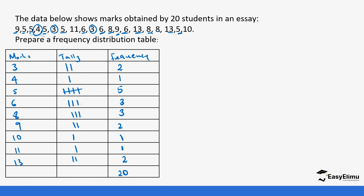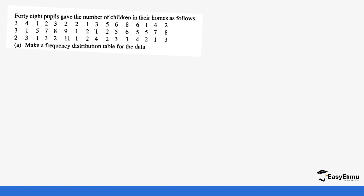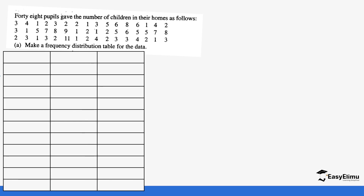Let's do one more example. We have 48 pupils who gave the number of children in their homes. We are going to set up our table with the column for number of children, then the tally column, and then the frequency column.